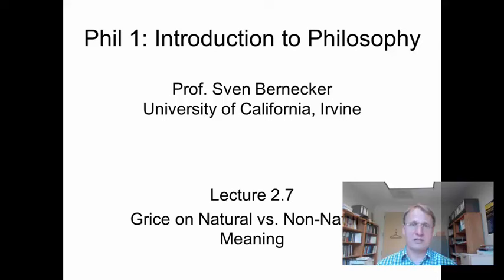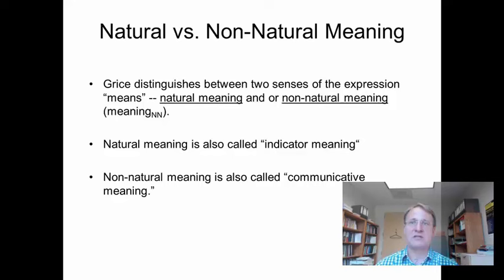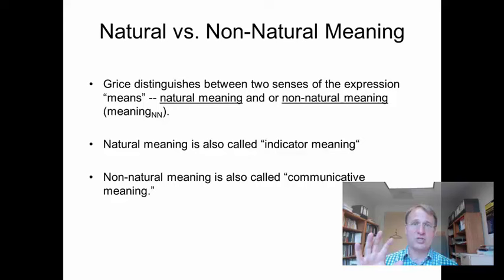In his short but crucial article 'Meaning,' Paul Grice identifies two kinds of senses of the phrase 'to mean,' or 'means something,' or 'means that.' This phrase can be taken in two different ways, which Grice calls natural meaning versus non-natural meaning.